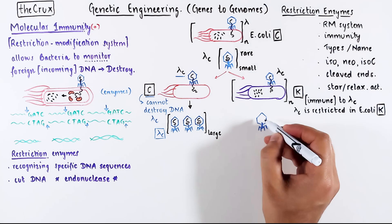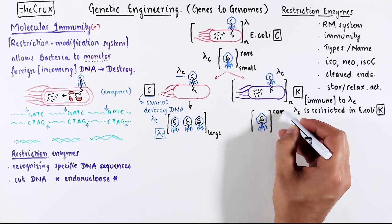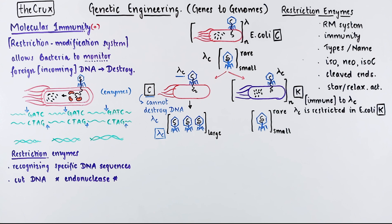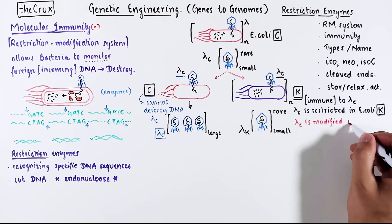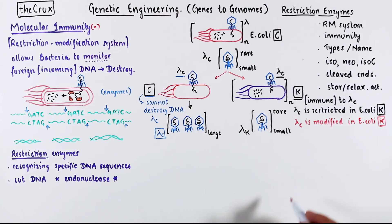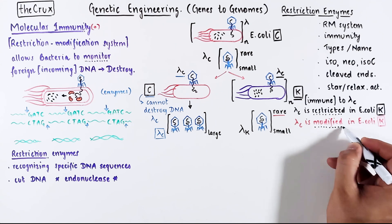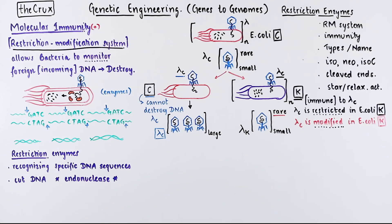But this rare population which started as lambda C will now be called lambda K. In case you haven't noticed, the name change of the virus depends on the host in which it was made. So somehow the lambda C is modified in E. coli K, and this event is rare. Now we're starting to enter the restriction and modification system that I promised we will explore.